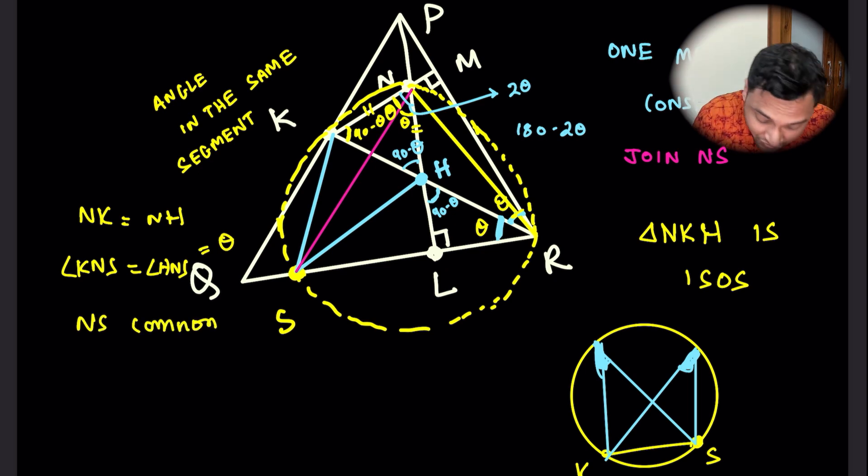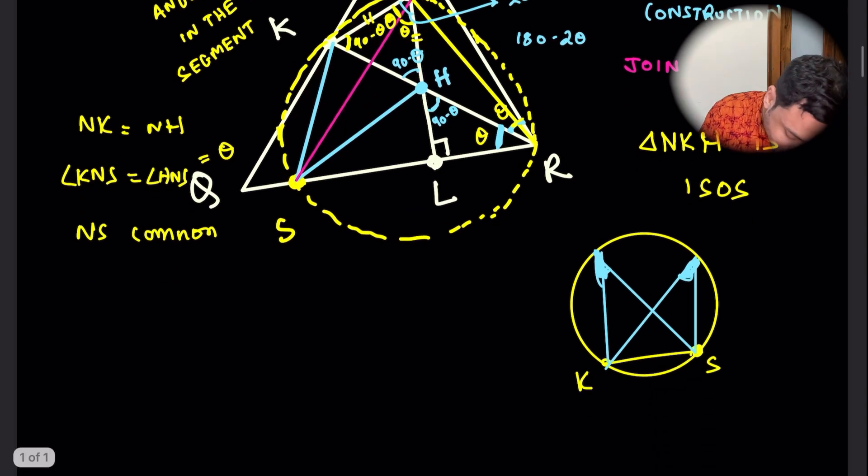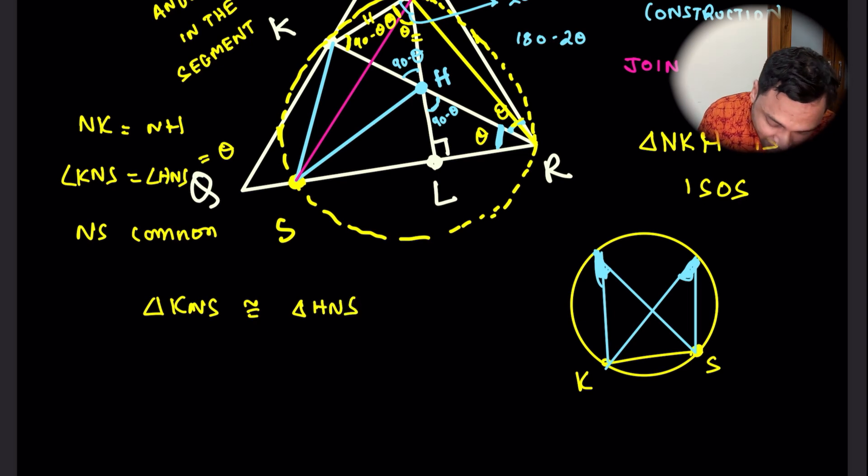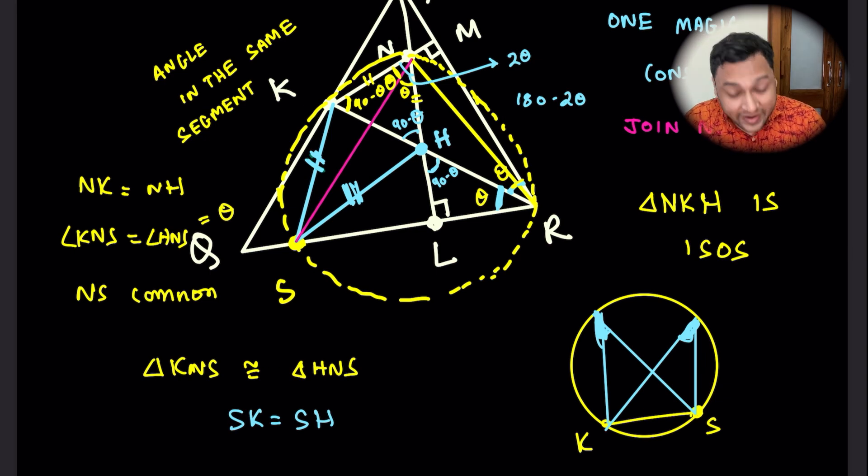And we have NS as a common side. So this is a common side. Therefore, the triangles KNS and HNS are congruent. Triangle KNS is congruent to triangle HNS. Therefore, SK must be equal to SH. Since these two triangles KNS and HNS are congruent, SK must be equal to SH. And that is, my friend, the final solution. Therefore, SHK is isosceles triangle.